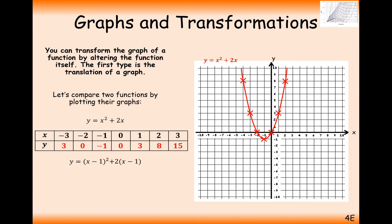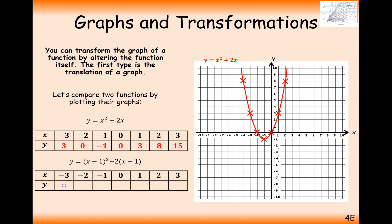Now we're going to look at how we move things left to right. What we've done this time, instead of just adding on 1 at the end, is we've taken away 1 from both of the x values before we square it or before we times it by 2. And when we plot these graphs, this is what we get.